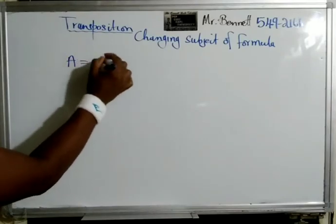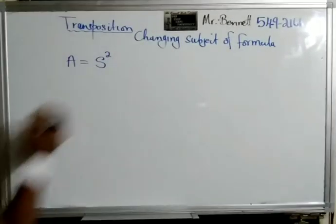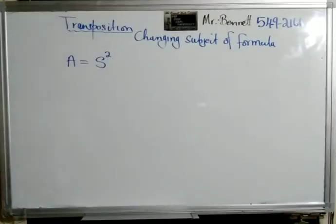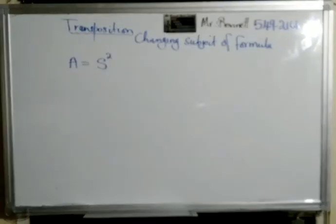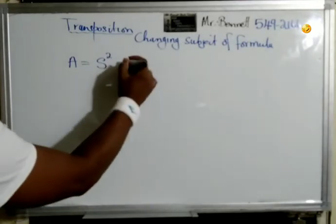Here A is equal to s squared. This is the area of a square — we multiply the side times side. We want to make s the subject of the formula.